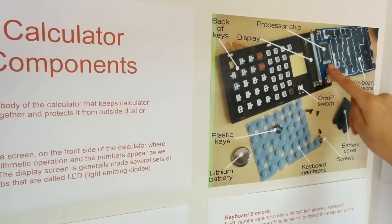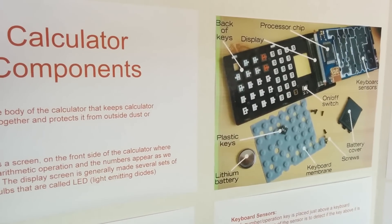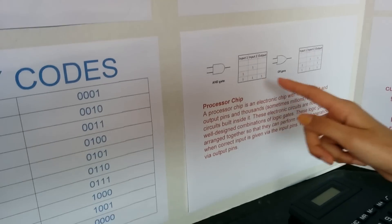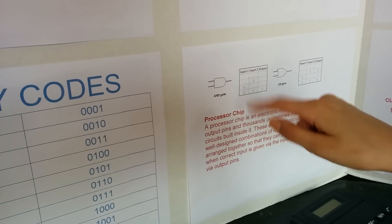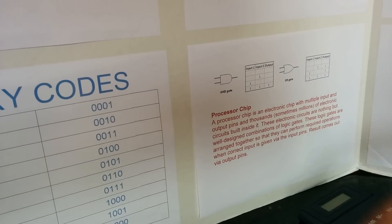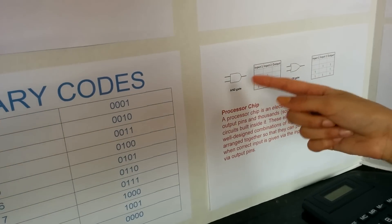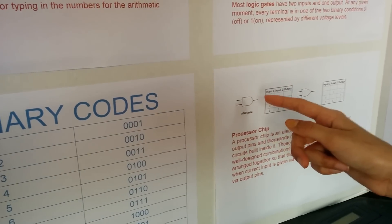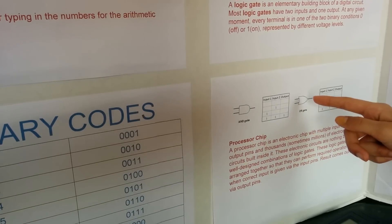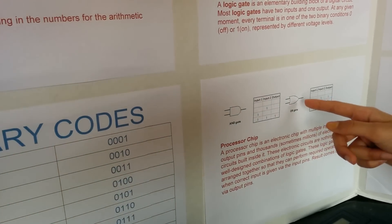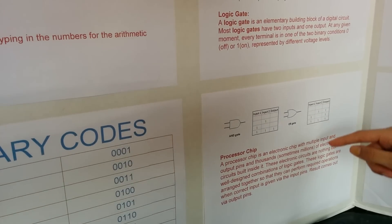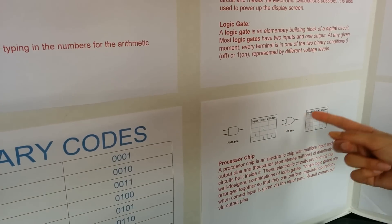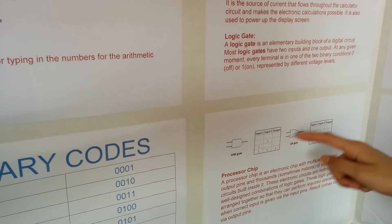The logic gates mainly do all the calculations. There's a logic gate for each operation. Here are two examples: an AND gate and an OR gate. For the AND gate, there has to be current coming in both inputs for current to come out of the output. And for the OR gate, there has to be current coming in at least one of the inputs for current to come out of the output.